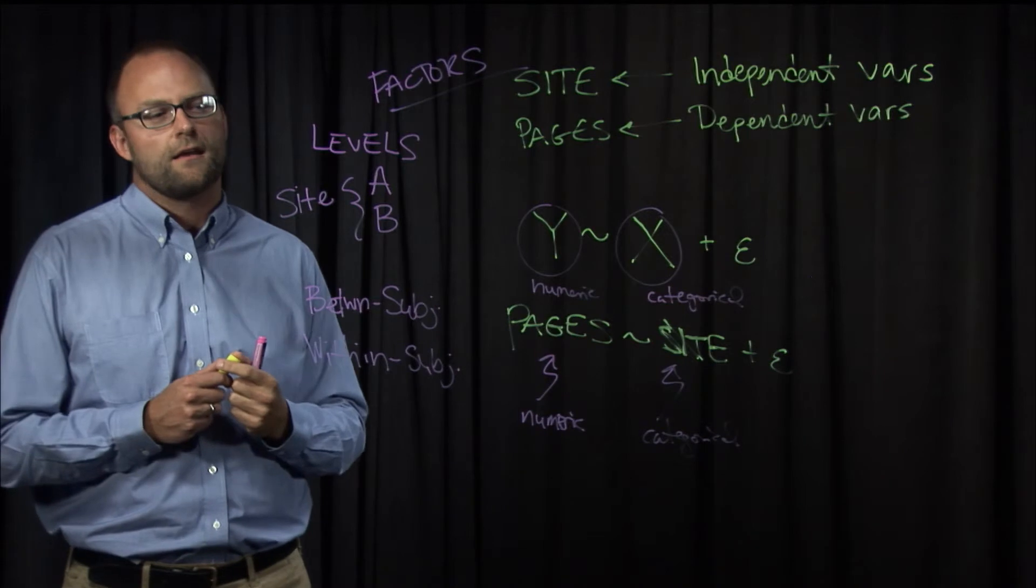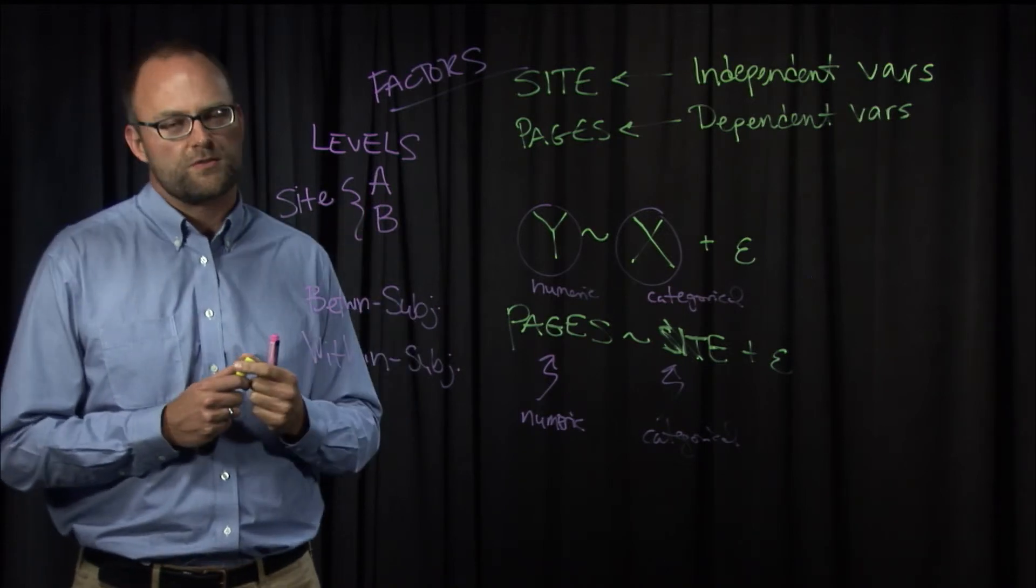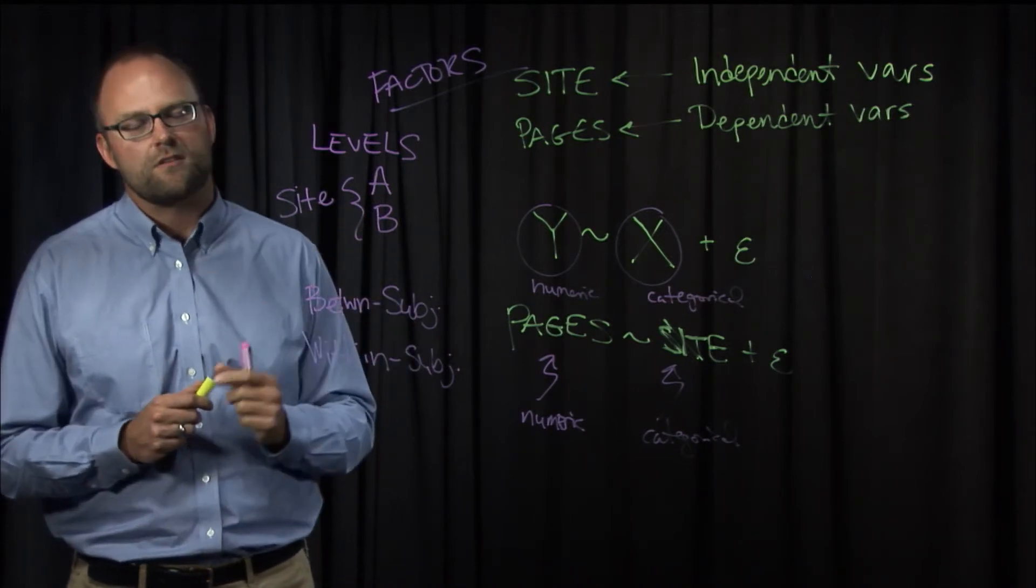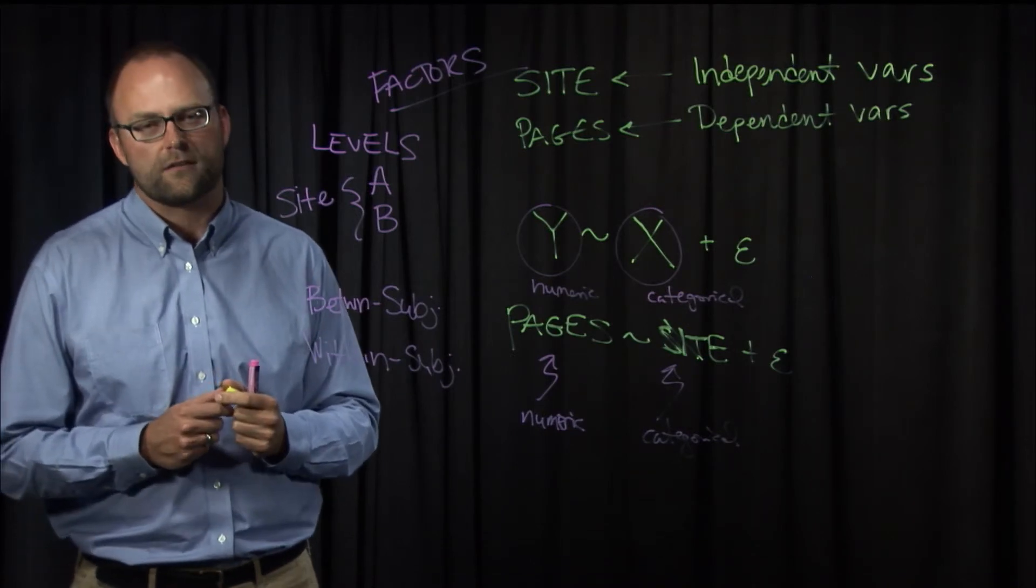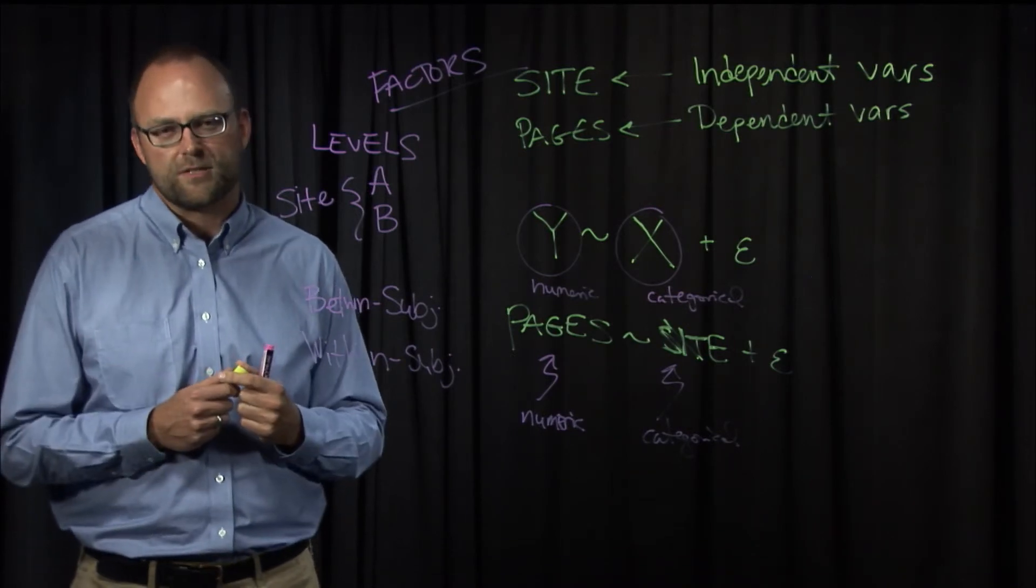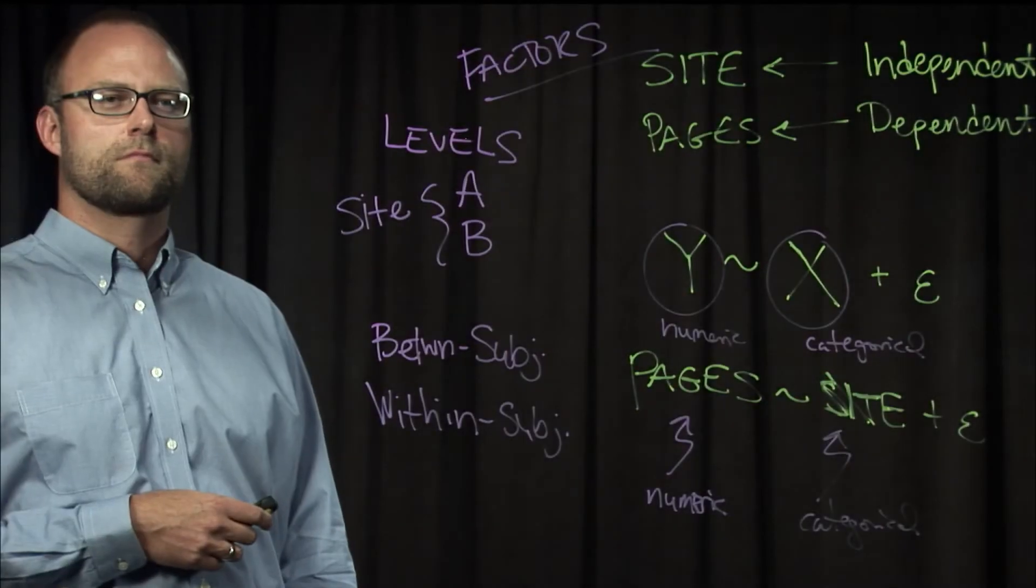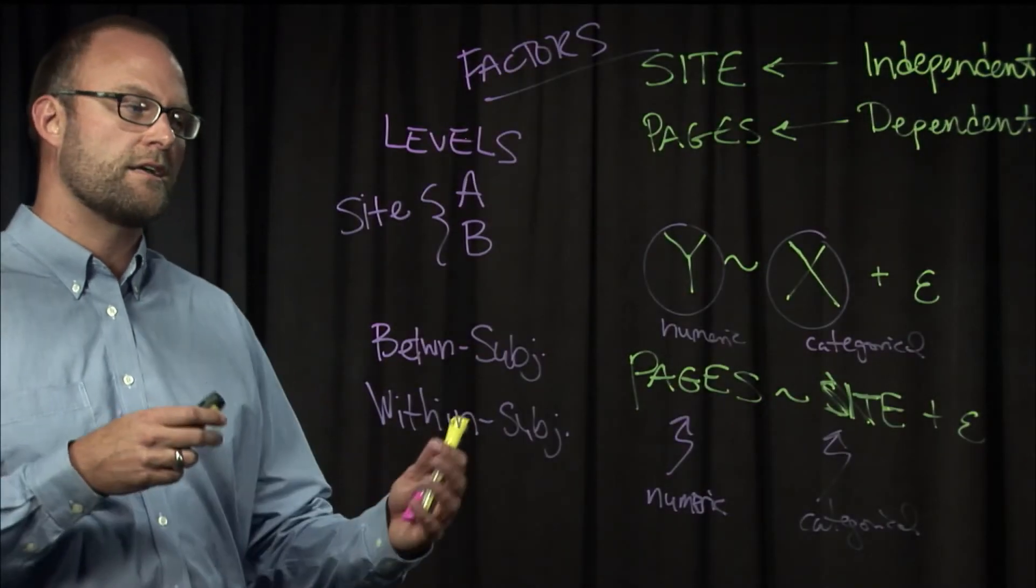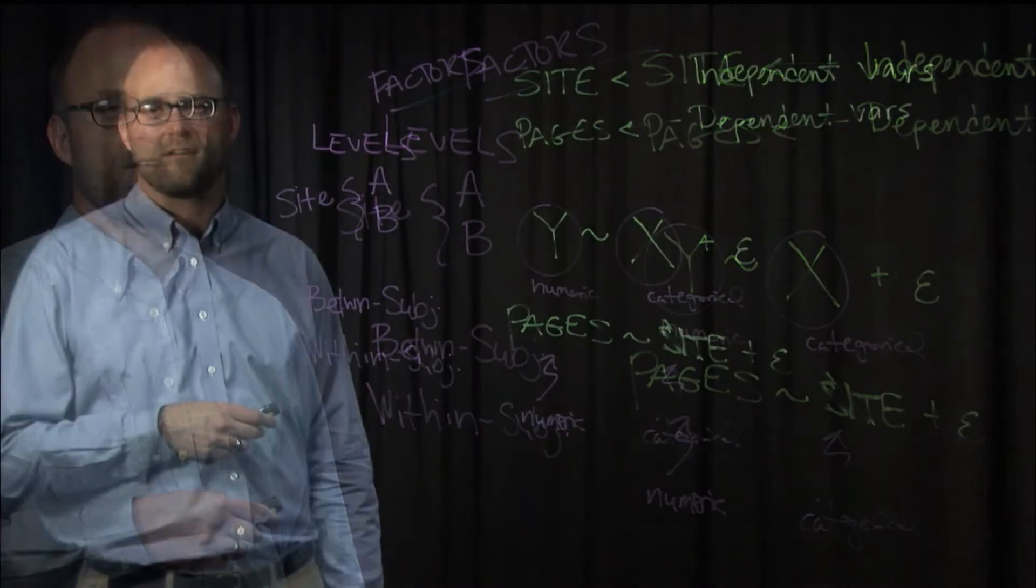So if we had A, B, C, and D versions of the site, if a participant was exposed to A and B, but maybe not C and D, it would still be a within subjects factor. It would be a partial within subjects factor at that point. So these are some of the design considerations for this website A-B test.